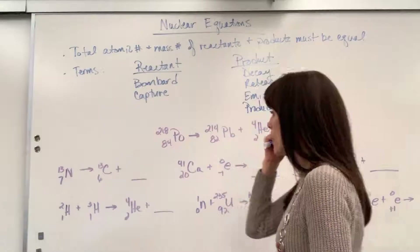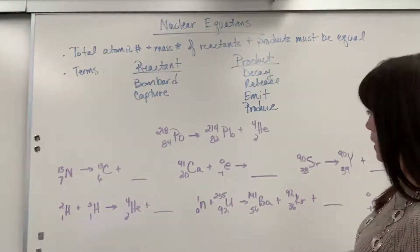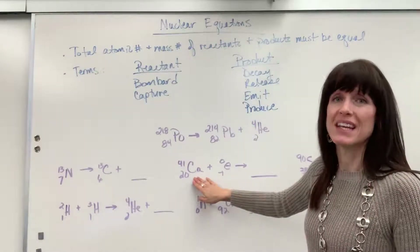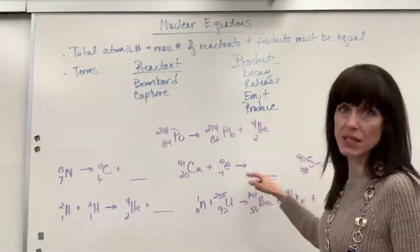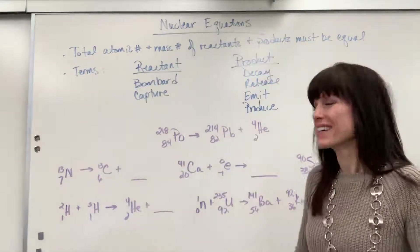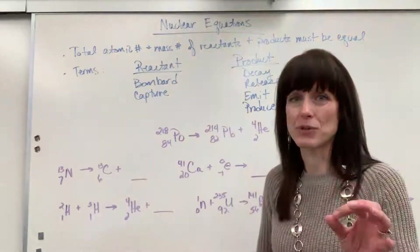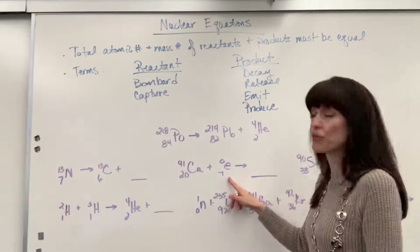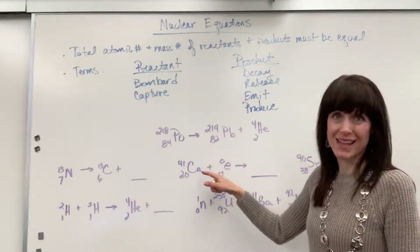For example, calcium-41 experiences electron capture to produce another particle. So when it says calcium-41 undergoes electron capture or is bombarded by an electron, that's code for: write that electron — that beta particle — on the reactant side.